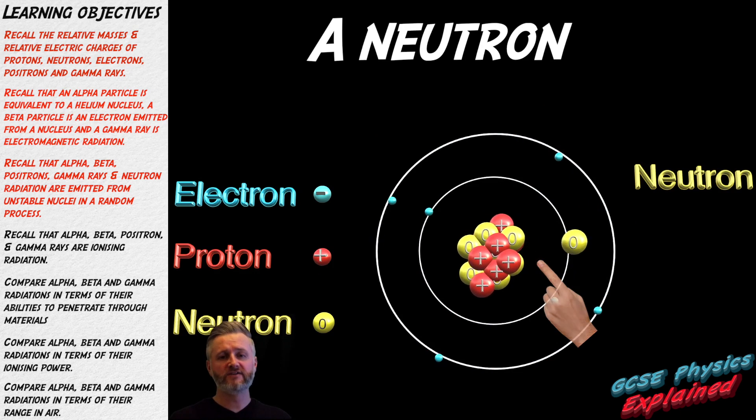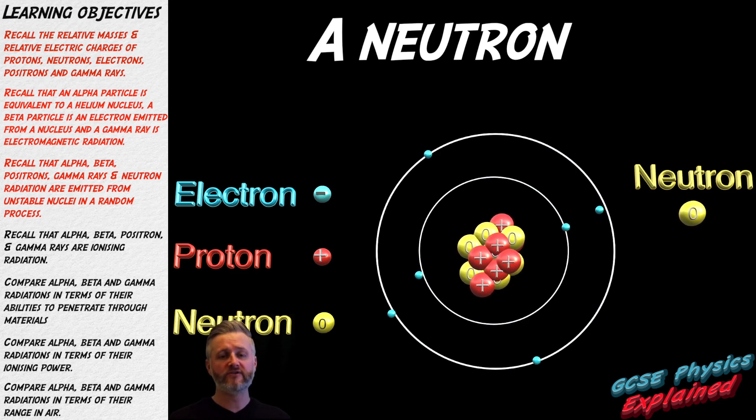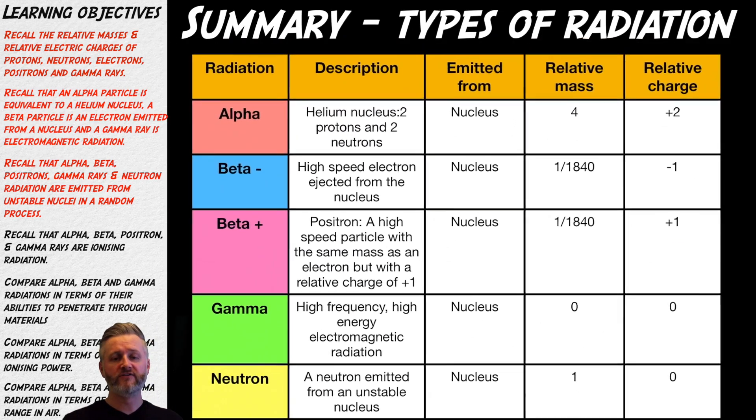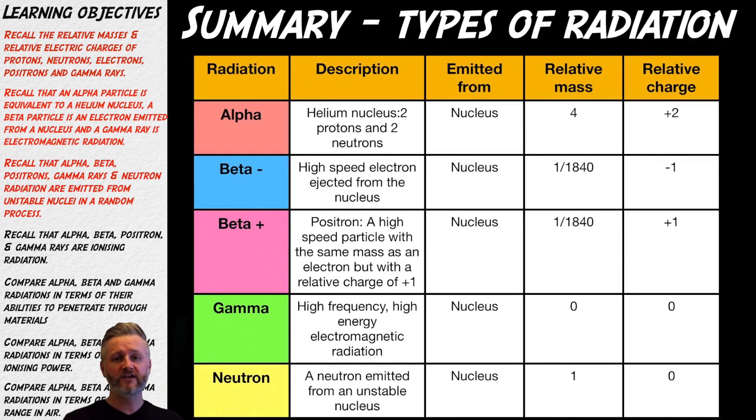A neutron is emitted from an unstable nucleus. It has a relative charge of zero and a relative mass of plus one. Here is a summary of the five types of radiation that you need to know for your exams. The table describes what the radiation is made from, where they are emitted from, their relative mass and relative charge. Pause the video to read the information.